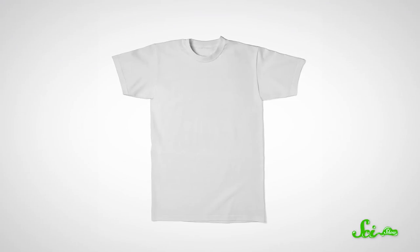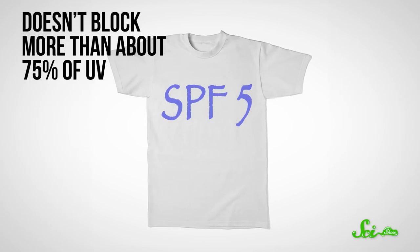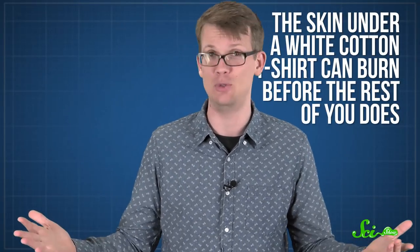But then there are things like white cotton shirts, which don't block more than about 75% of UV. So they are no better than about SPF 5. Which means that if you wear sunscreen on any exposed skin, even if it's just SPF 10, the skin under a white cotton t-shirt can burn before the rest of you does. So you can still get sunburned through some clothes.